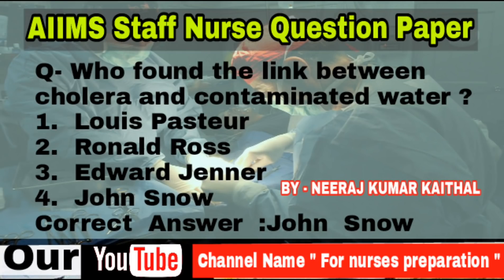The next question is: Who found the link between cholera and contaminated water? Options: Louis Pasteur, Ronald Ross, Edward Jenner, John Snow. The correct answer is John Snow. Cholera is an infectious disease that causes severe watery diarrhea, which can lead to dehydration and even death if untreated. It is caused by eating food or drinking water contaminated with a bacterium called Vibrio cholerae.